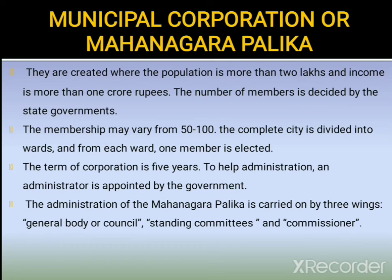Now, Municipal Corporation or Mahanagarpalika. They are created where the population is more than 2 lakhs and income is more than 1 crore rupees. The number of members is decided by the state government and may vary from 50 to 100. The complete city is divided into wards and from each ward one member is elected. The term of corporation is 5 years. To help administration, an administrator is appointed by the government. The administration is carried on by three wings: general body or council, standing committees, and commissioners.